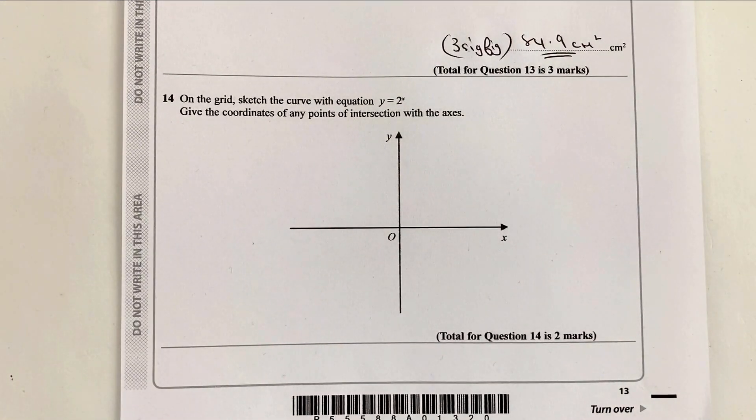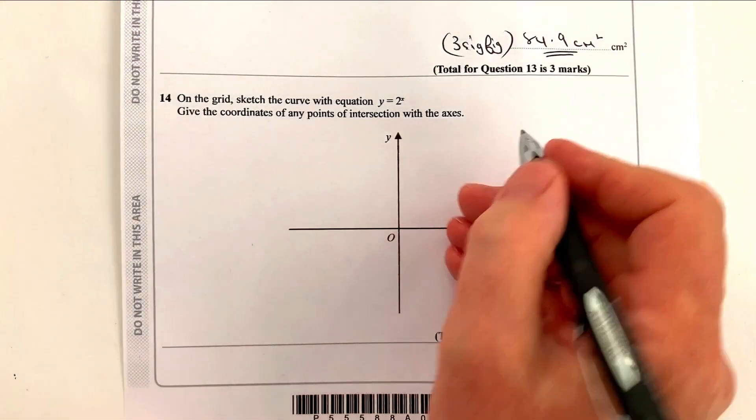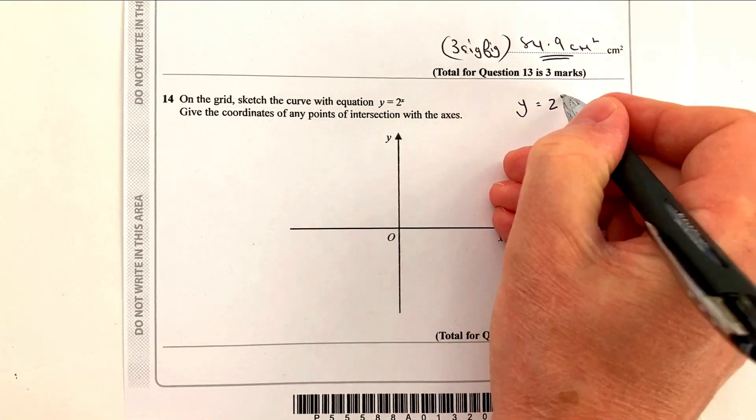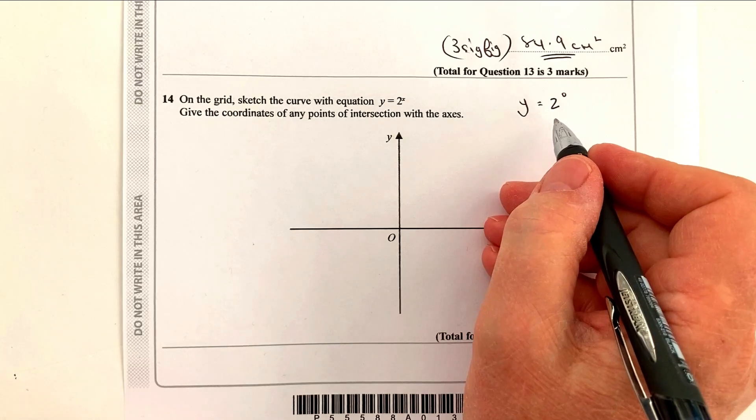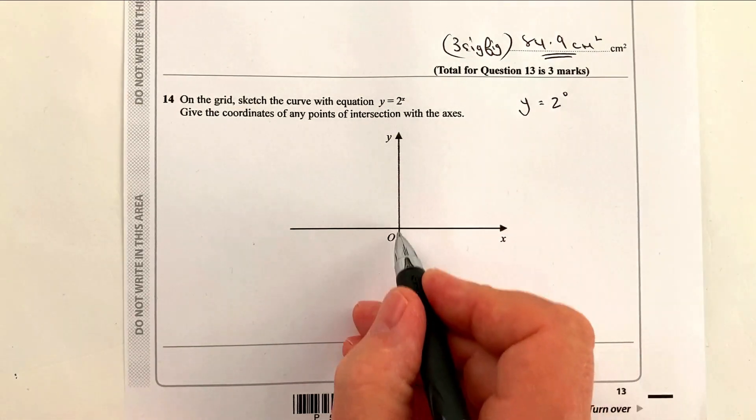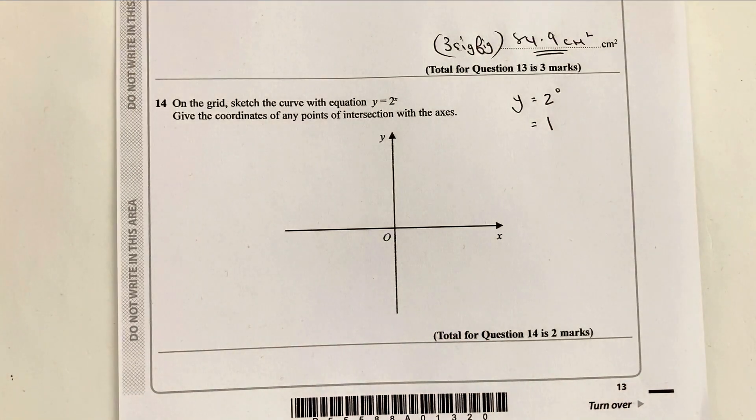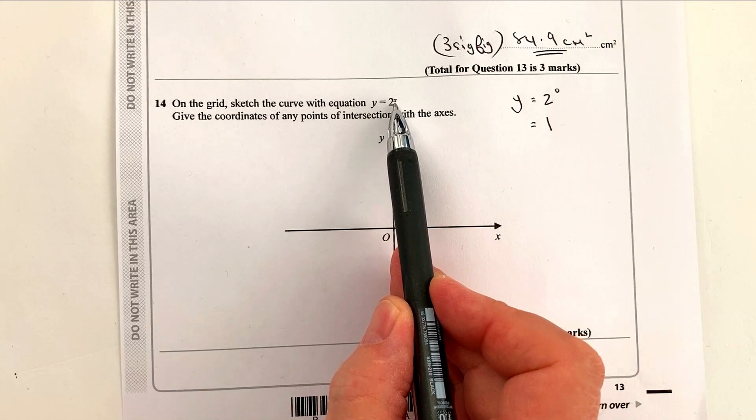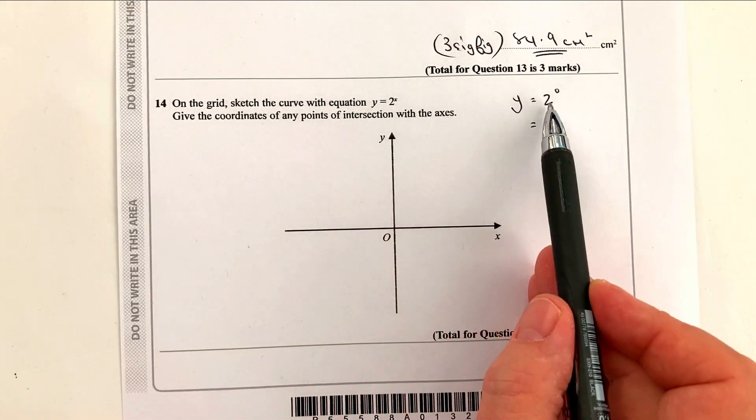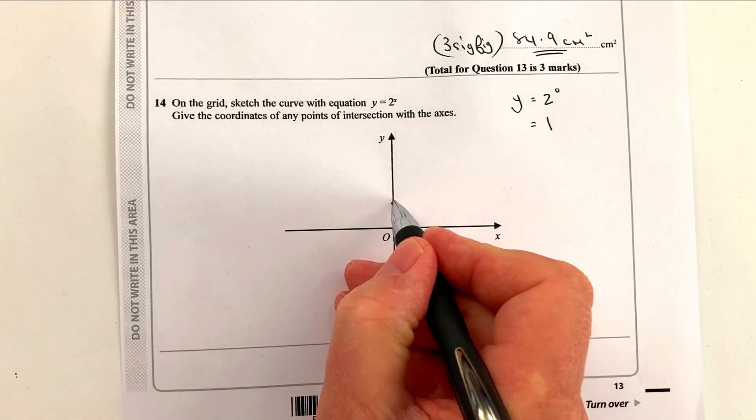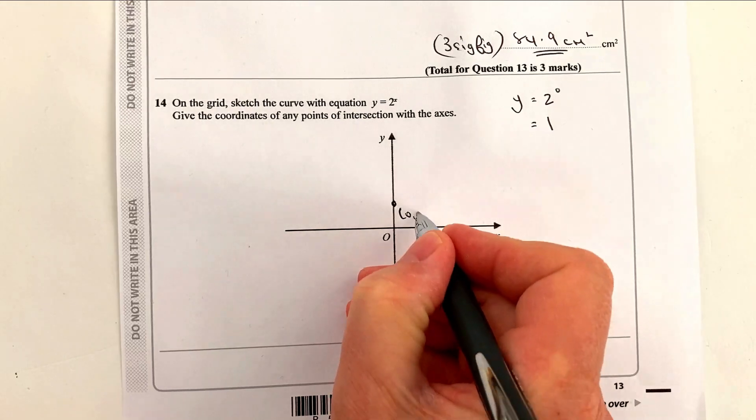Let's move on then to question number 14. On the grid, sketch the curve with the equation of that. What we've got to remember is that any number to the power of zero is going to be one. So basically, two to the power of zero, if the value of y is equal to two to the power of zero, in other words the x coordinate has not moved at all, that's going to give you one. When the value of the x coordinate, this x coordinate is zero, it's two to the power of zero, which is actually one. So therefore, it crosses through at this point, zero, one.